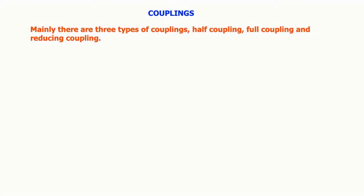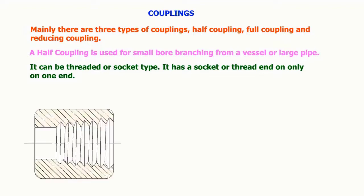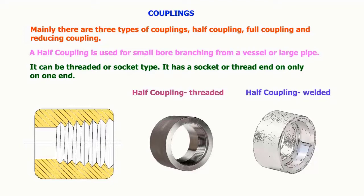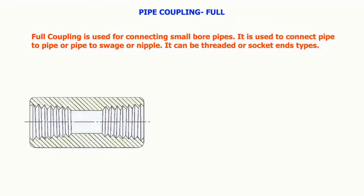Mainly there are three types of couplings: half coupling, full coupling, and reducing coupling. A half coupling is used for small bore branching from a vessel or large pipe. It can be threaded or socket type. Full coupling is used for connecting small bore pipes, to connect pipe to pipe or pipe to swage or nipple. It can be threaded or socket end types.